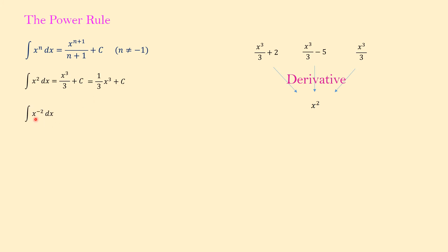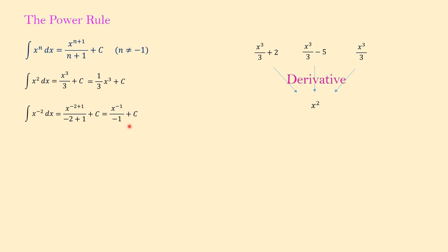Another example: the antiderivative or integral of x to the negative 2 dx. The answer is x to the negative 2 plus 1 over negative 2 plus 1. We are adding to the power and putting the new power in the denominator. Negative 2 plus 1 equals negative 1, so it simplifies to x to the negative 1 over negative 1, which we can rewrite as negative 1 over x plus c. Don't forget the constant c — it is very important in any indefinite integral.